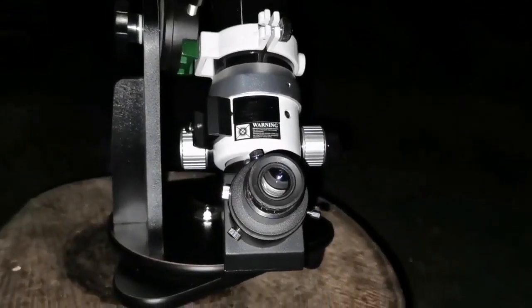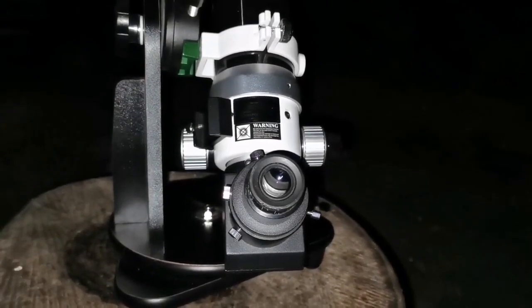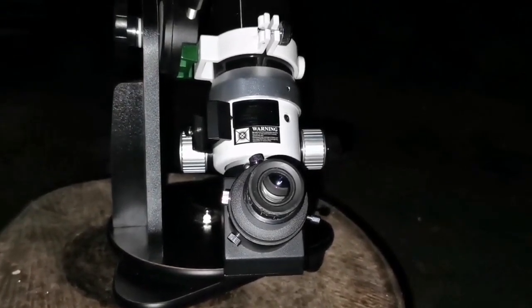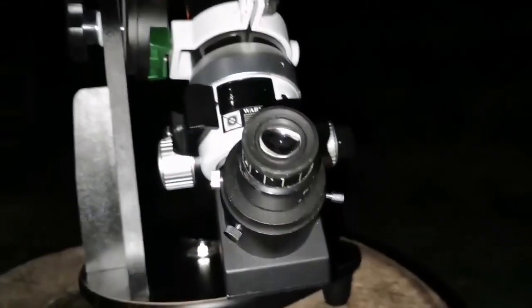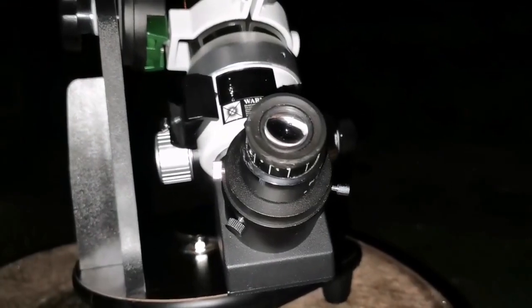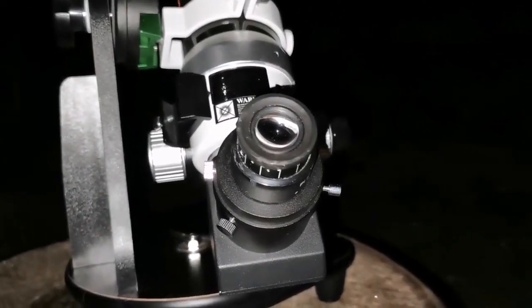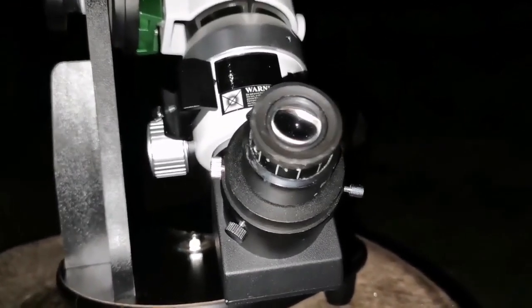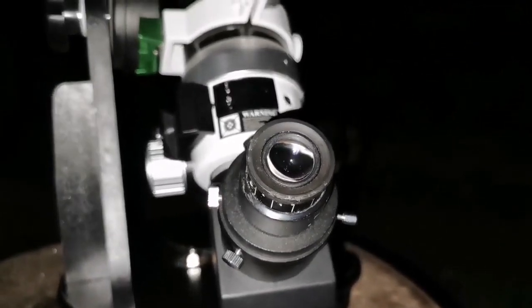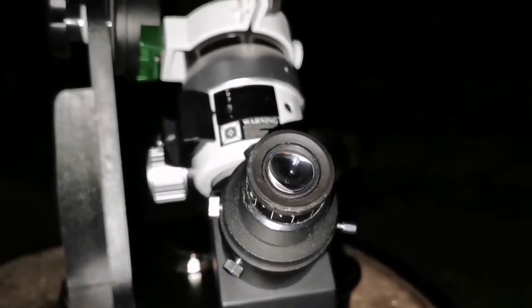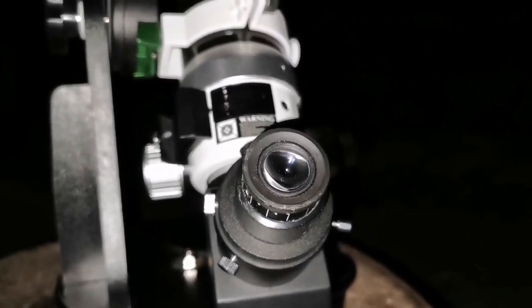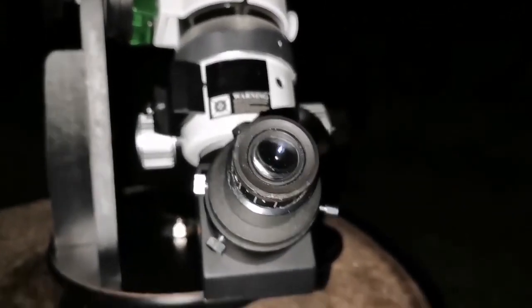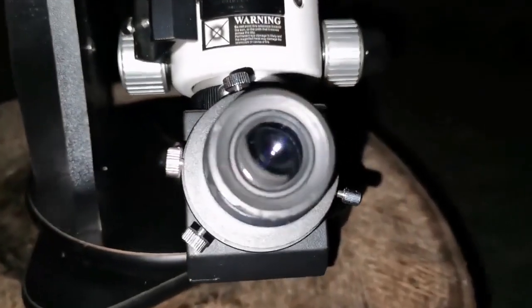This is the Skywatcher ED-72 Apochromatic Telescope that I'm using and this is the Zeiss 25mm 57 degree eyepiece. This is the Zeiss PL 10x20. Let's see how is the view with this telescope.